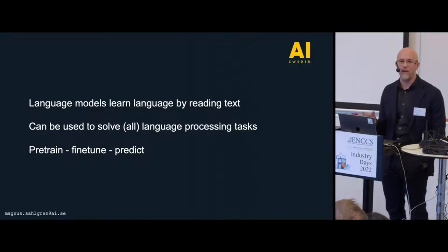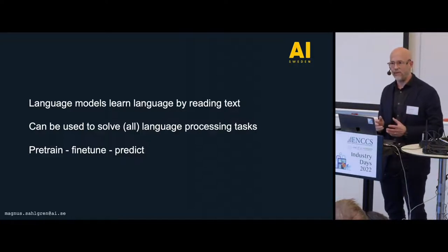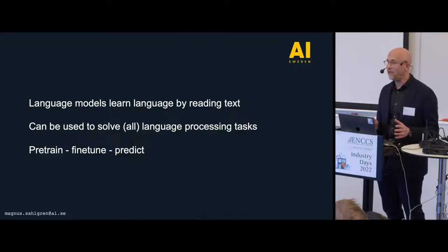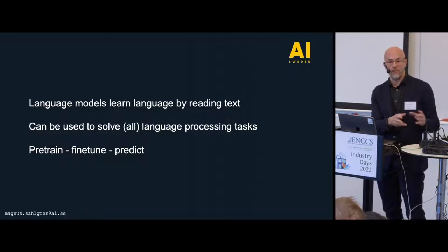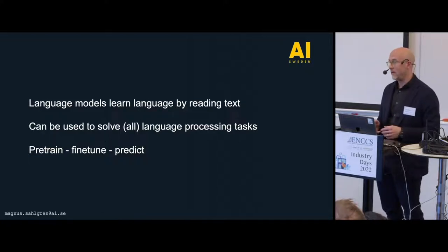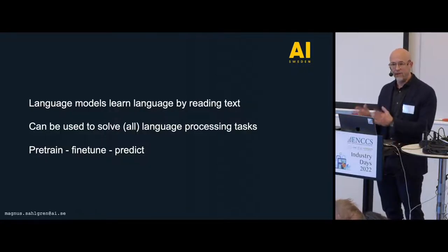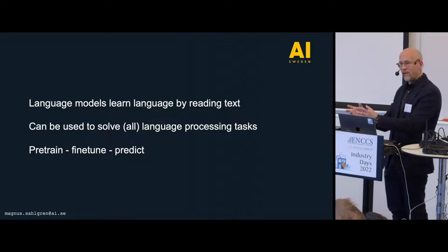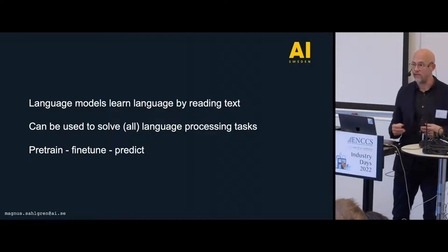The way that we use language models is we train a language model — and I'm going to show you how big they are soon — that's called pre-training. When we have trained a model, it's typically open-sourced and available for everyone to use. You can download a language model and then fine-tune it to solve specific tasks like named entity recognition, question answering, or translation. Once you have fine-tuned an instance of the model, you can use it in production to do predictions on new data.